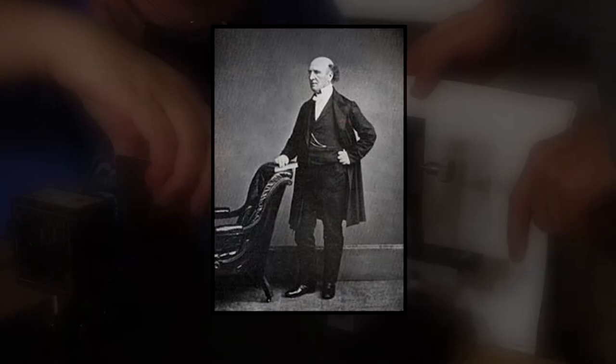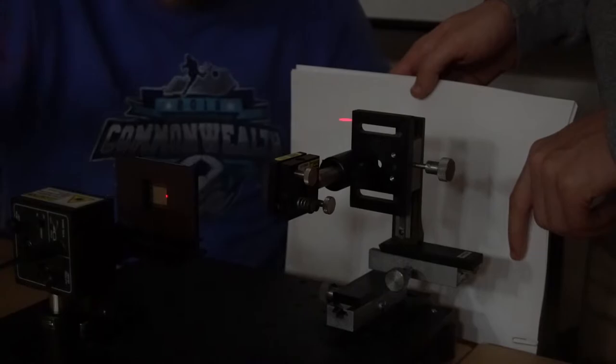Lloyd's mirror is an optics experiment that was first described in 1834 by Humphrey Lloyd. The reflected light interferes with the direct light from the source, forming an interference pattern identical to that of a double slit.